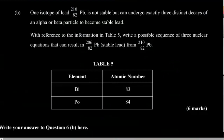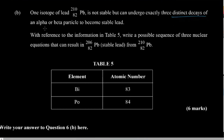One isotope of lead is not stable, but can undergo exactly three distinct decays of an alpha or beta particle to become stable lead.